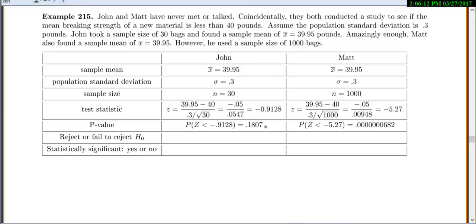So, John has a p-value 0.18. That would be a big p-value. And because it's a big p-value, we will fail to reject the null hypothesis. Now, Matt, though, he got a tiny, tiny p-value, a very small p-value. And he will certainly reject the null hypothesis. And is it statistically significant? Statistically significant, again, means you have a small p-value. So, this would be no. And this would be yes.